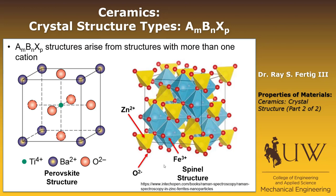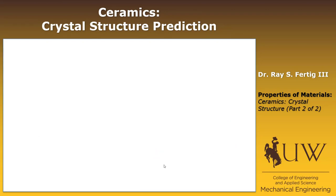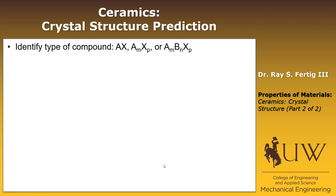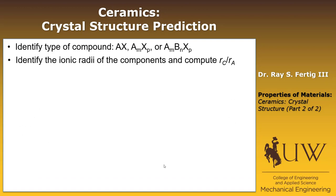I do want you to be aware that, number one, these structures are very complicated, but number two, almost all of them are based on some of the fundamental structures we've already talked about with respect to metals. Now let's move on to talk about structure prediction. It's actually straightforward: we first identify the type of compound — whether it's AX, AmXp, or AmBnXp — then identify the ionic radii of the components, compute the appropriate ratios, and look those ratios up in a table to get the structure.